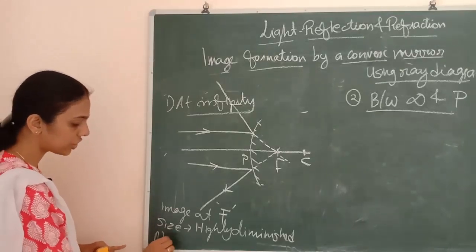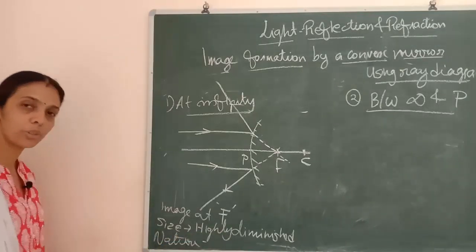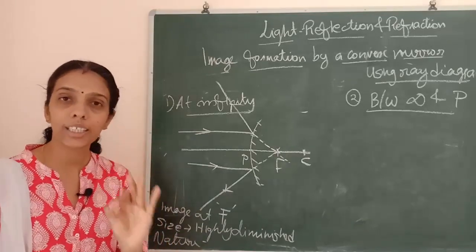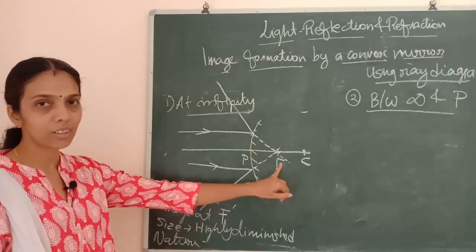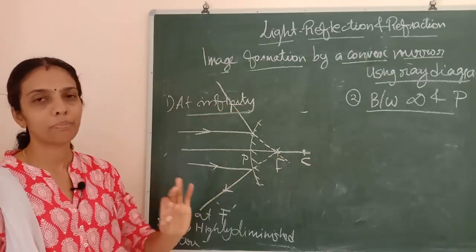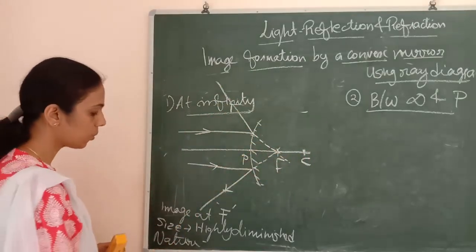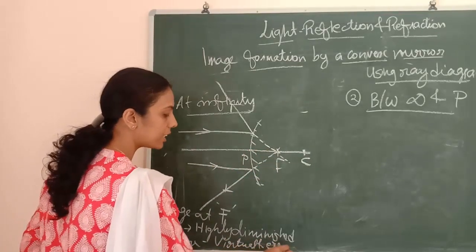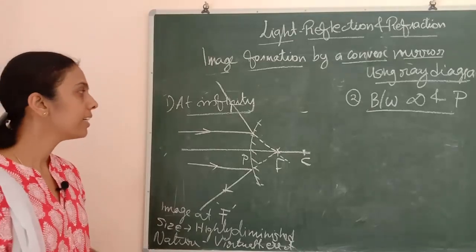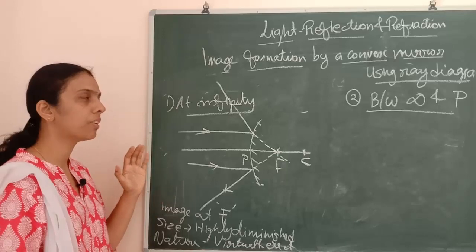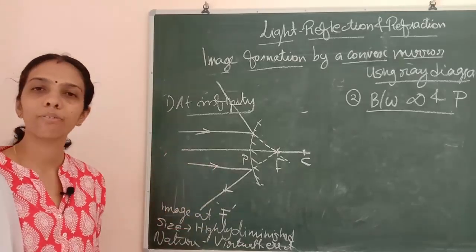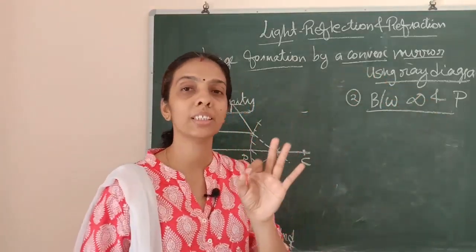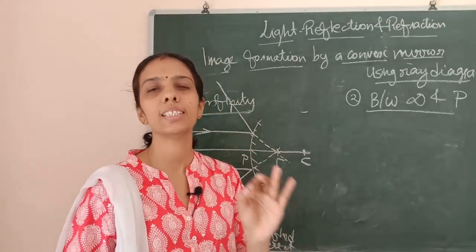What will be the nature of the image? Here the rays are not actually meeting anywhere — we are making the extensions meet at one point. So the image is virtual and erect. Clear — when the object is at infinity, the image in a convex mirror is at the principal focus, highly diminished, virtual, and erect.